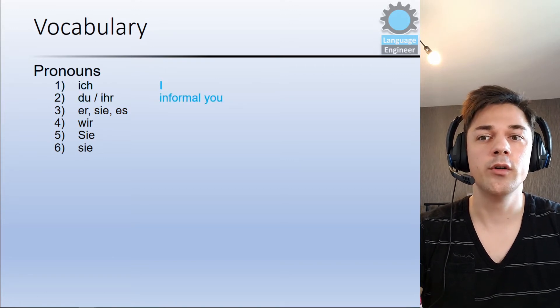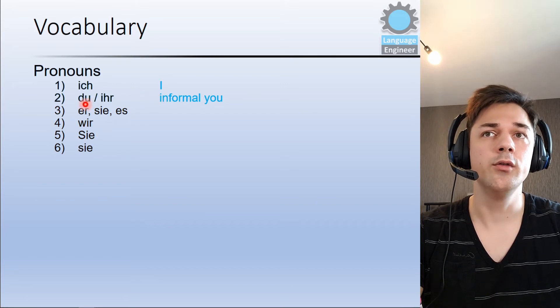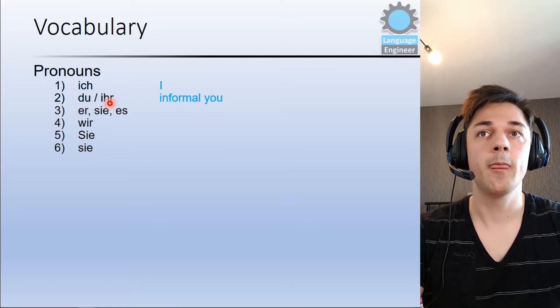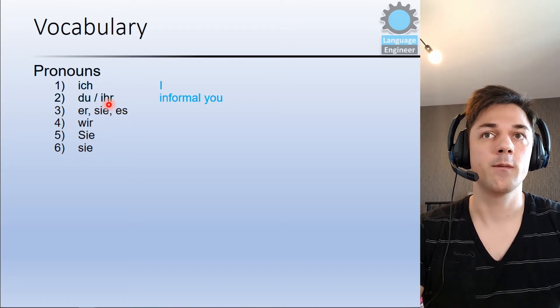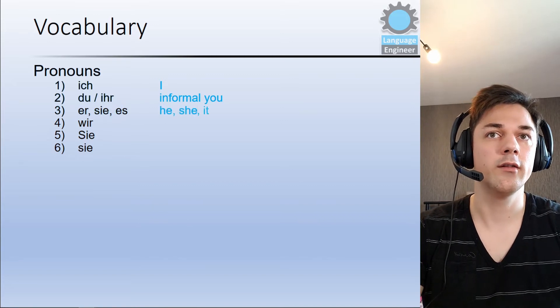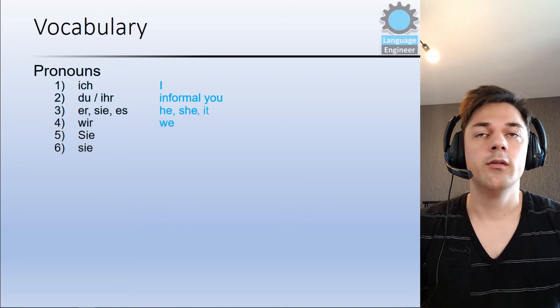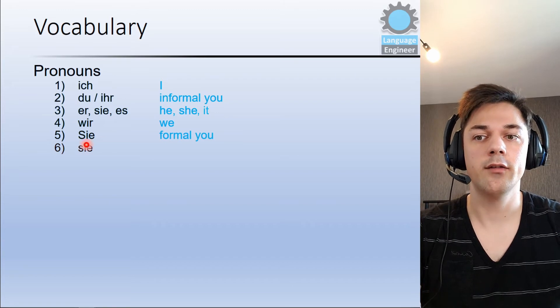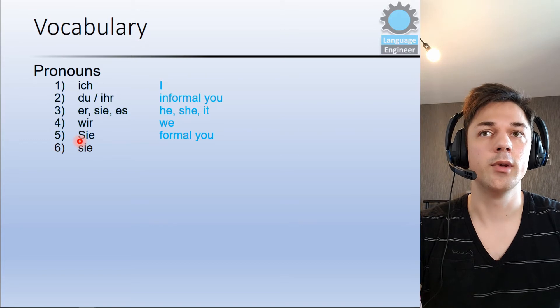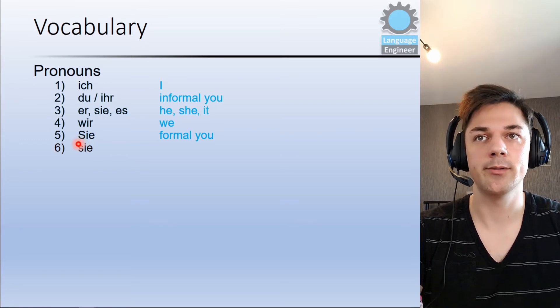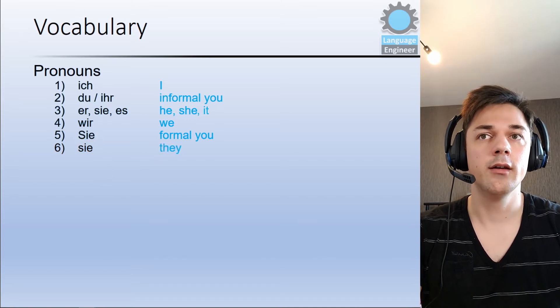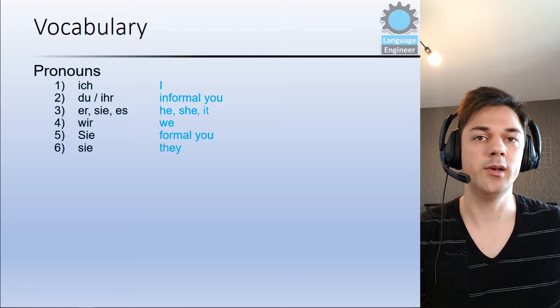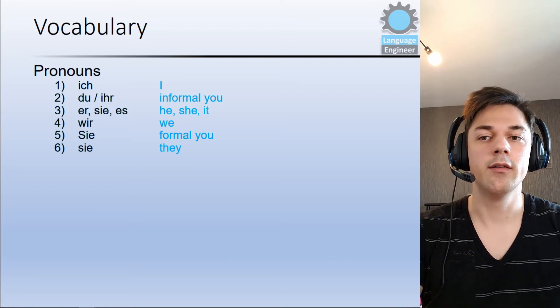So the next one is du. Du means the informal you and we have two yous. So this first one here du is the singular you informal. And then we have ihr which is the plural you, also informal. Then we have er sie es. Er sie es means he, she, it. Then we have wir means we. Sie is the formal you and you can see that I use the capital letter S because when we use the formal you we always use the capital letter. And then we have sie again but here it means they. And for example if there are some people here and we are talking about them then we can use sie.